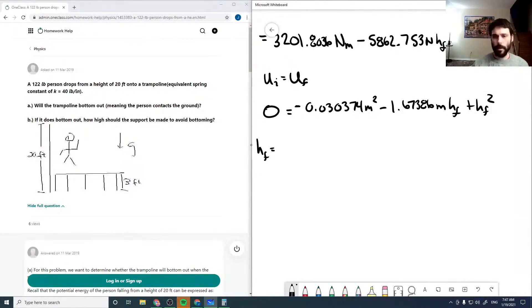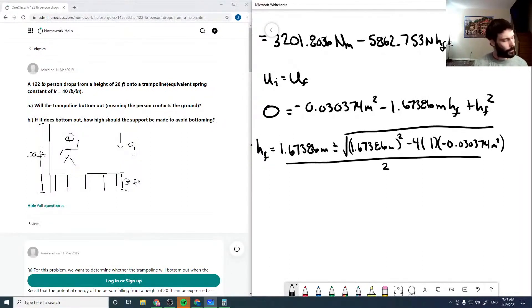As minus b plus or minus root b squared minus 4ac all over 2a, which is equal to 1.67386 over 2 plus or minus 1.70977 over 2.